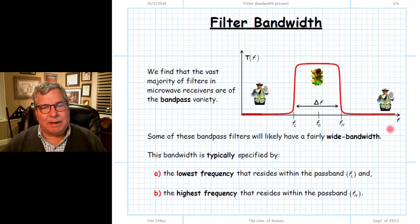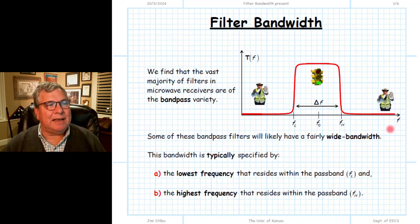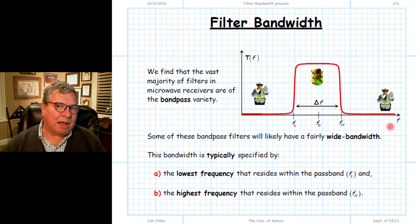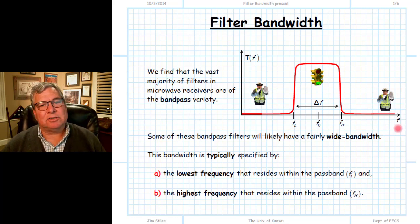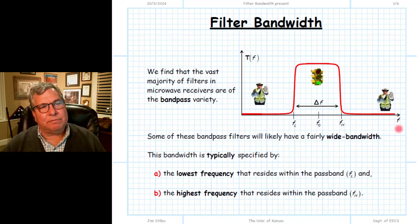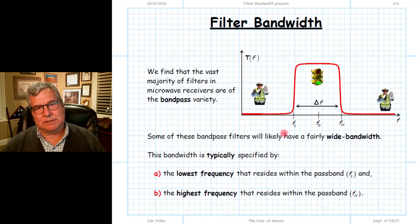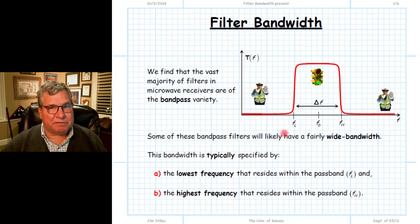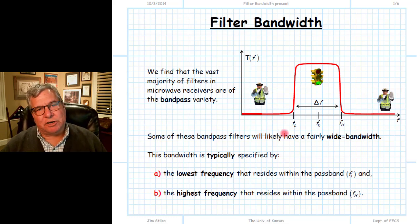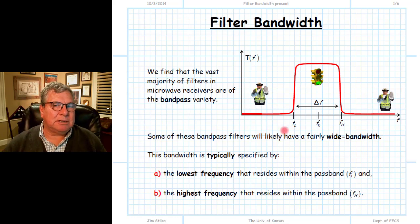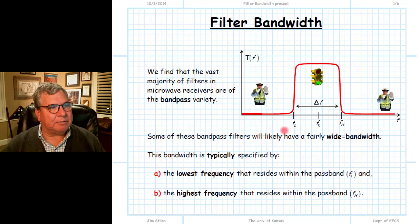So take omega and divide by two pi, and that will give you the frequency f in cycles per second, more commonly known as Hertz. The numbers we give for filter bandwidth are almost always expressed in Hertz — more specifically, generally megahertz (millions of cycles per second) or gigahertz (billions of cycles per second).